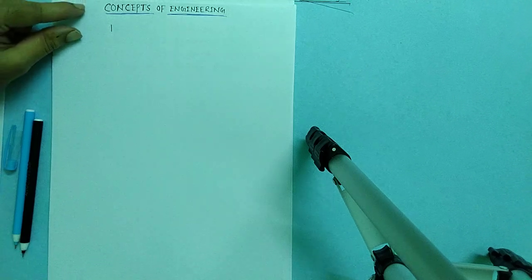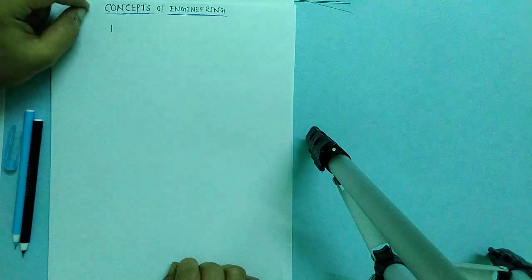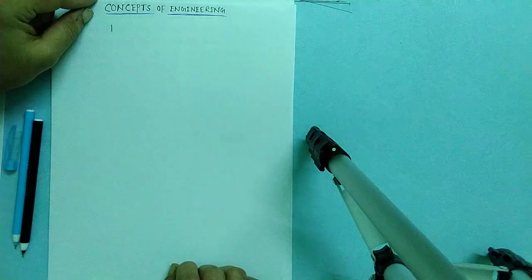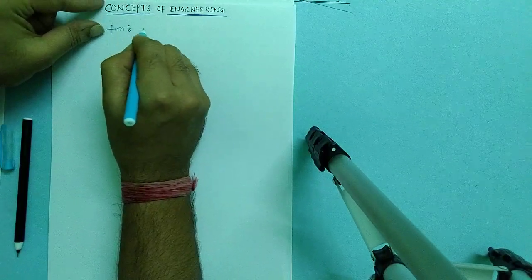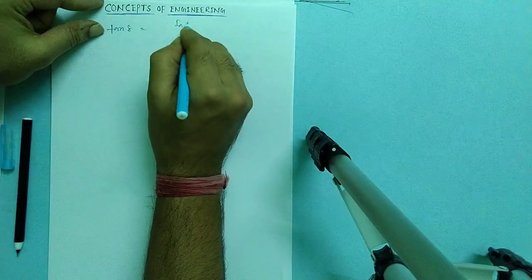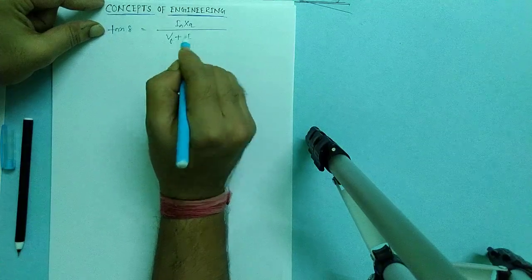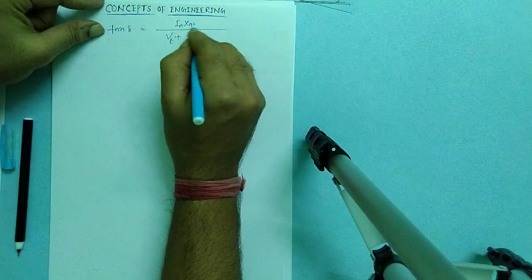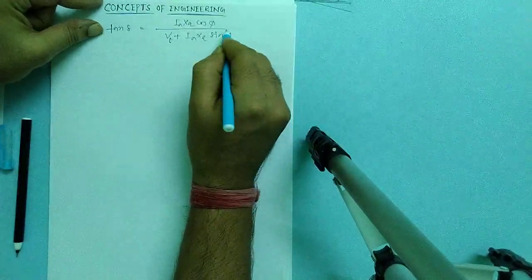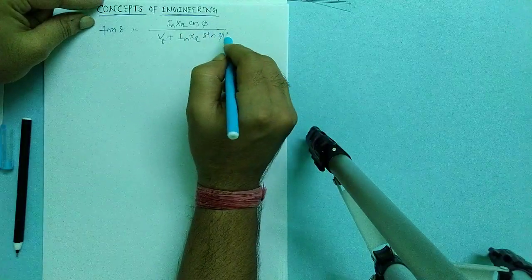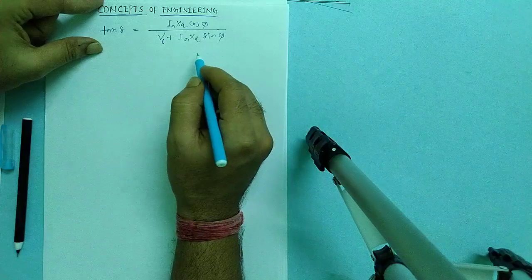Hello all, today I'm going to derive some formulas which I did not derive last lecture, which is tan del equals I_a X_q by V_t plus or V_t, which is terminal voltage, and I_a X_q cos phi by V_t plus I_a X_q sin phi. This is for the alternator salient pole alternator when it is supplying the load of lagging power factor.